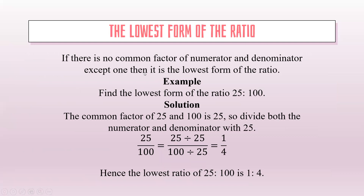The lowest form of the ratio. If there is no common factor of numerator and denominator except one, then it is the lowest form of the ratio. For example, find the lowest form of the ratio 25 is to 100. The common factor of 25 and 100 is 25. So we divide both the numerator and denominator by 25: 25 divided by 25 gives us 1, and 100 divided by 25 gives us 4. So the lowest form of 25 is to 100 is 1 is to 4.